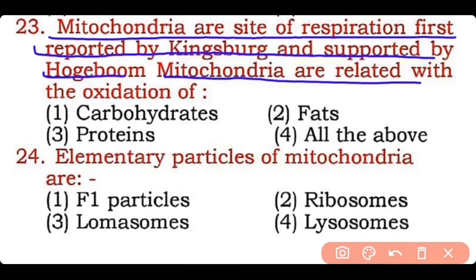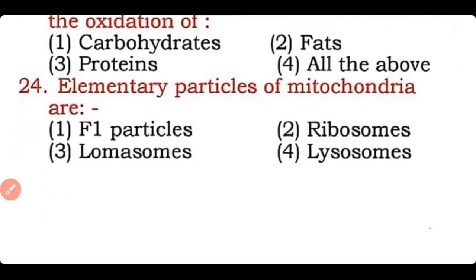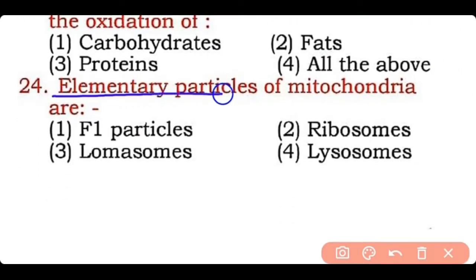Correct answer for Q23 is option four — mitochondria are related with oxidation of carbohydrates, proteins, as well as fats. Question 24: Elementary particles of mitochondria are — F1 particles, ribosomes, lomasomes, or lysosomes? Correct answer is option one — the elementary particles of mitochondria are F1 particles; they contain ATP enzyme and play a central role in the formation of ATP.